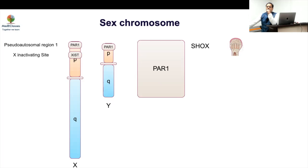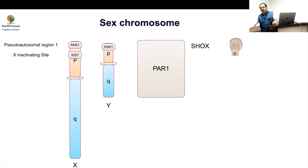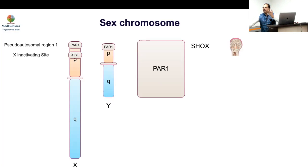The SHOX gene is responsible for growth, and in Turner syndrome there is only single expression of SHOX — this is what causes growth failure. If you have Klinefelter syndrome, you have three copies, but lyonization occurs so the effect is not as great. With an XYY karyotype there is no lyonization, so you have three SHOX copies and these individuals are the tallest.